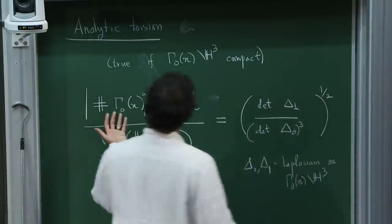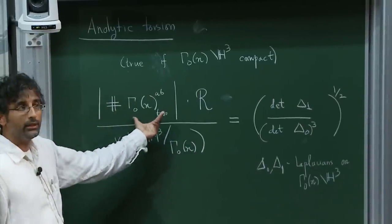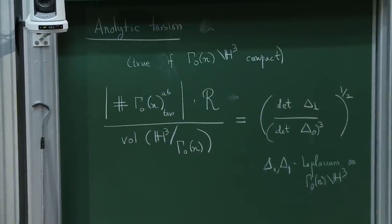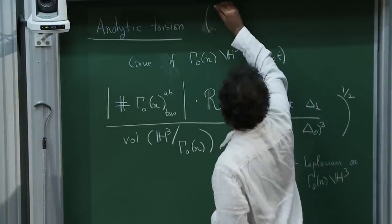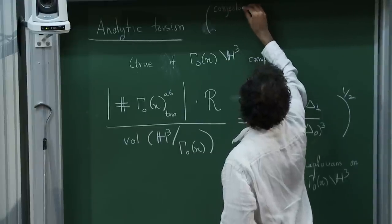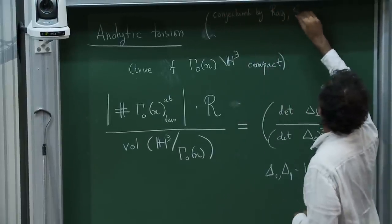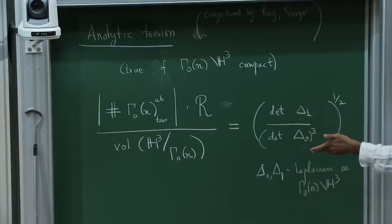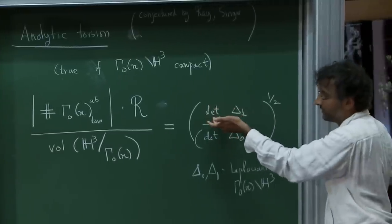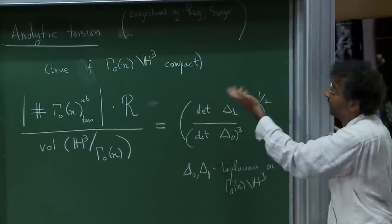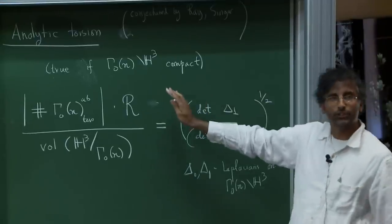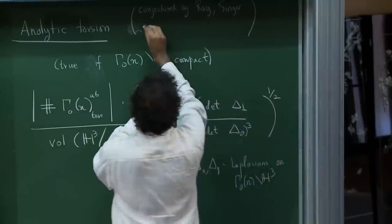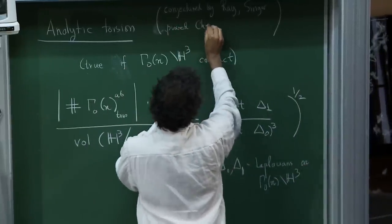This is a remarkable formula because it says this object from discrete group theory can be computed analytically. It was conjectured by Ray and Singer — who also defined how to take the determinant of something infinite-dimensional, which was their insight. It was proved independently by Cheeger and Müller. Importantly, a version of this formula is true for any compact Riemannian manifold — it has nothing to do with number theory.